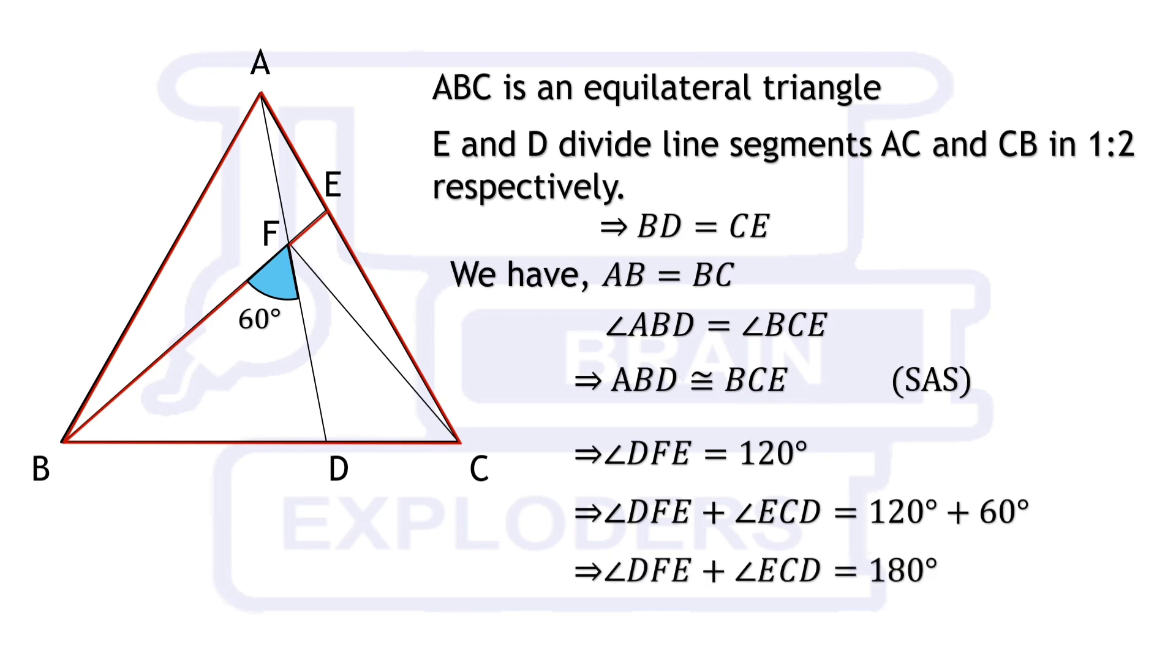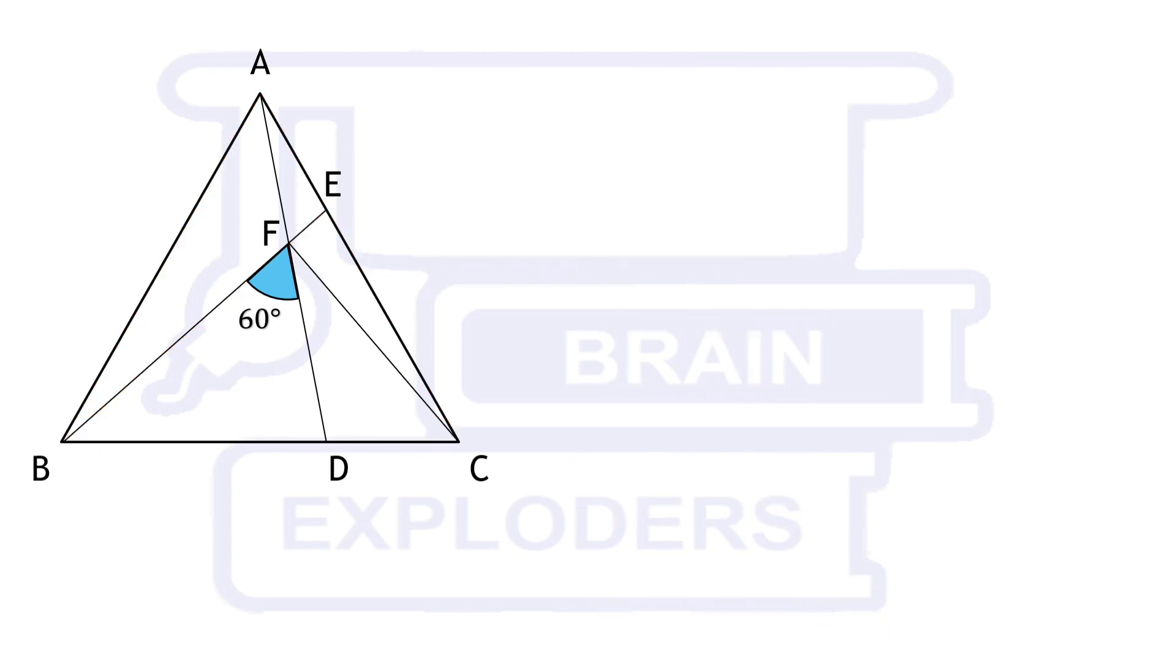Hence in quadrilateral FDCE opposite angles have a sum of 180 degrees. This means it is a cyclic quadrilateral. So if we draw a circle which passes through any three vertices of this quadrilateral then the circle will definitely pass through the fourth vertex.